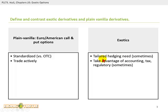In theory, we need exotic options to tailor the hedge — or put in more technical terms, the point of exotics is to reduce our basis risk.